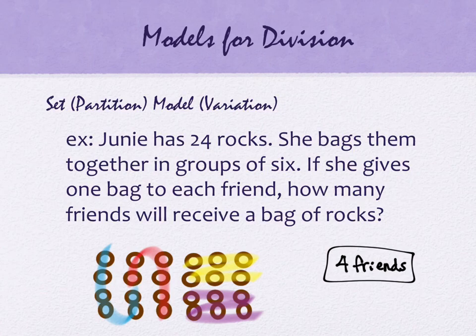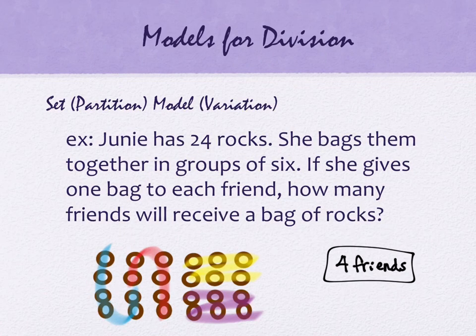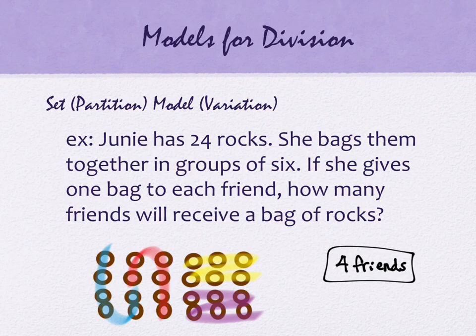I want to mention this in case it isn't covered when you take proportional and statistical reasoning: one of these models works really well and the other doesn't work very well for division with fractions. In the partition model, I'm controlling how many groups I have — and I can't have a fractional number of groups. That doesn't make sense. How do I say I'm going to have half a group? But on the variation model, I could control the size of each group to be one half. Imagine the rocks are cookies — could I make bags with half a cookie in each bag? Yes. So this model works better for fractional division because of the way it's structured.